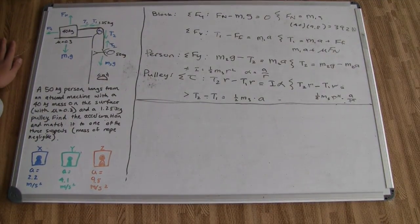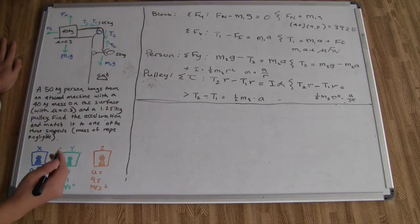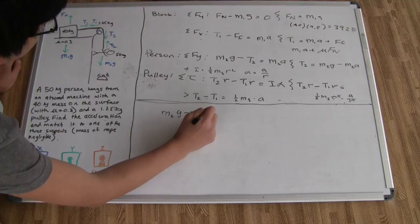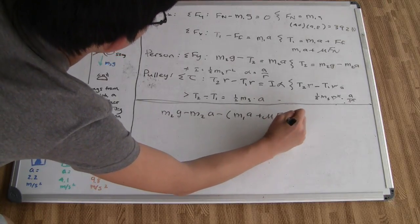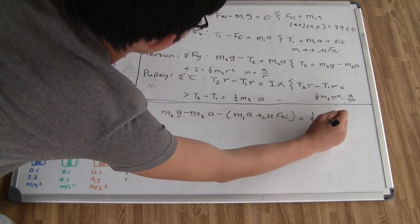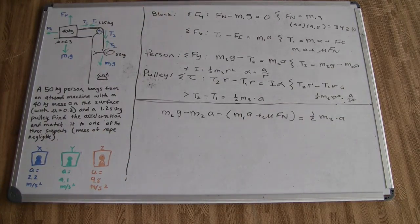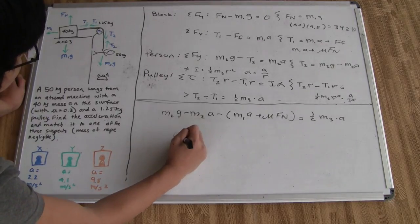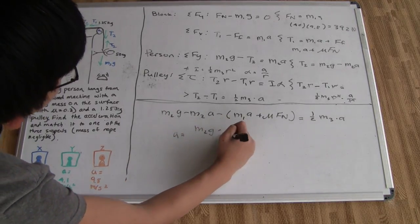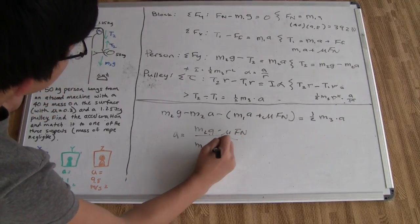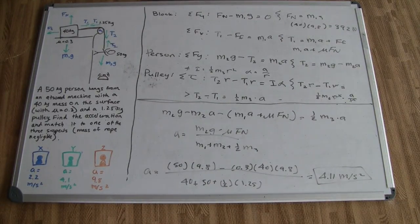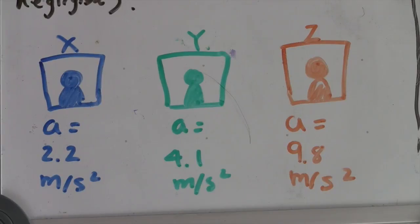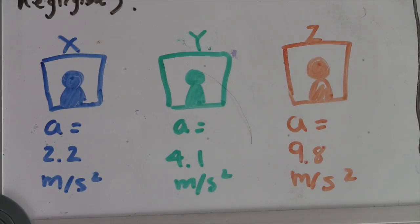Now that we have equations for both tensions, we substitute them back in. So m₂g − m₂a minus (m₁a + μFₙ) equals one-half m₃ times a. Solving for acceleration: a = (m₂g − μFₙ) / (m₁ + m₂ + one-half m₃). After substituting the given values, the person's acceleration is 4.11 m/s². This matches Suspect Y, making Suspect Y the true culprit.